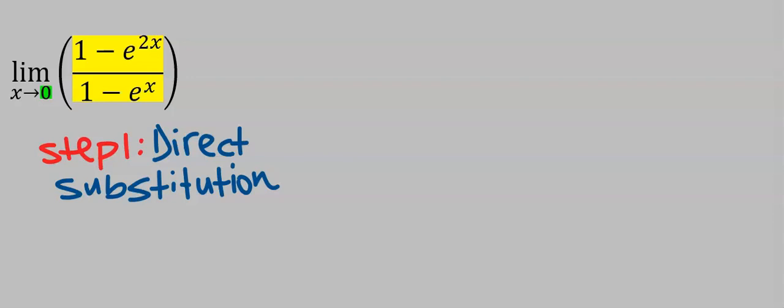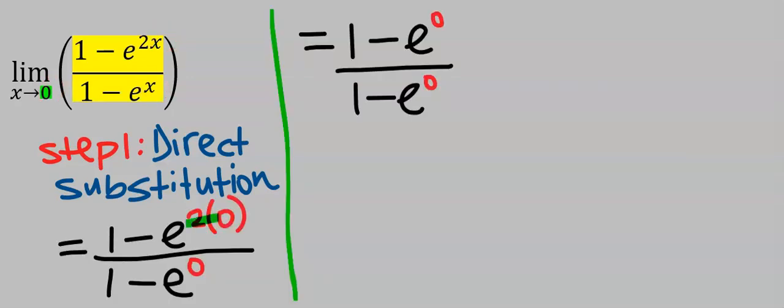That is, wherever you see x, you are going to replace it with zero. And here, two times zero is zero. Next, anything to the power of zero is one.